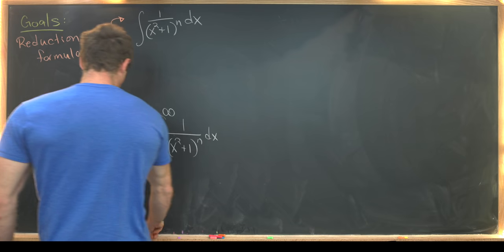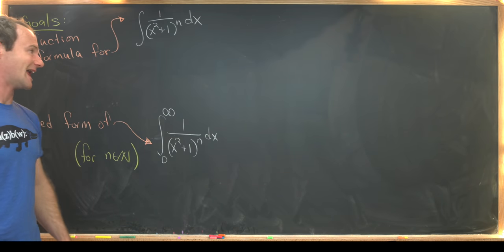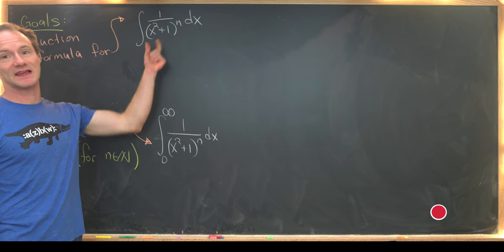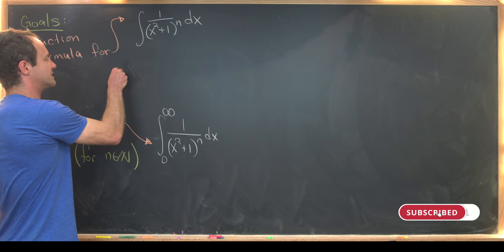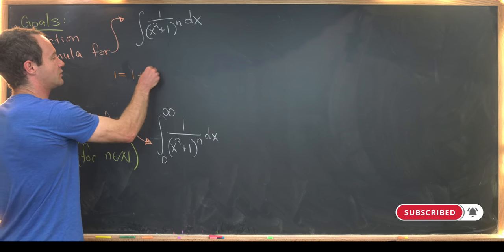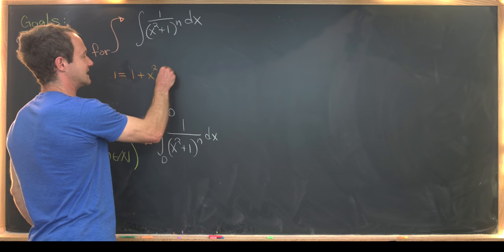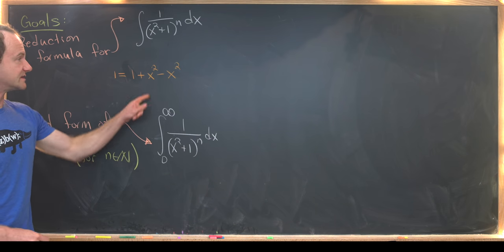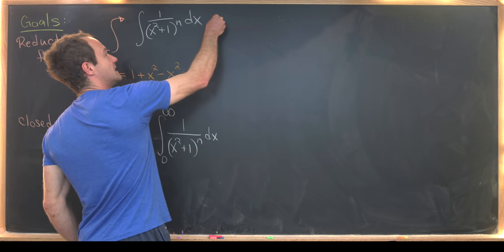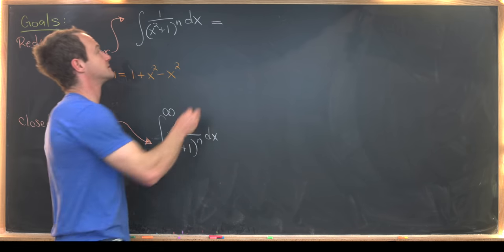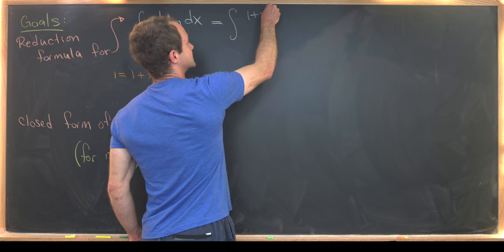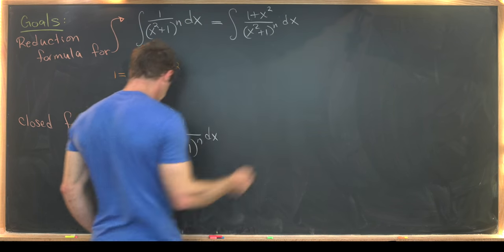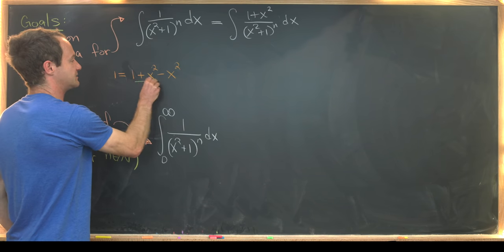I'm going to start with the trick of taking this numerator and adding 0. The version of 0 I should add is probably one so that I can cancel out something in the denominator. I'm going to notice that 1 is the same thing as 1 plus x squared minus x squared. So now let's throw that into the numerator and split this into two different integrals, leaving us with 1 plus x squared over x squared plus 1 to the n dx.